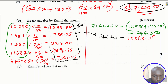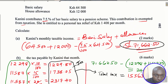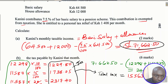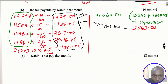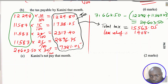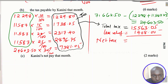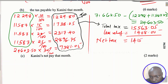To get the net tax — that is, the total tax payable — we subtract the personal tax relief of 1,408 shillings per month. So 15,563.05 minus 1,408 gives a net tax of 14,155.05 shillings. That is the tax payable by Canini that month.